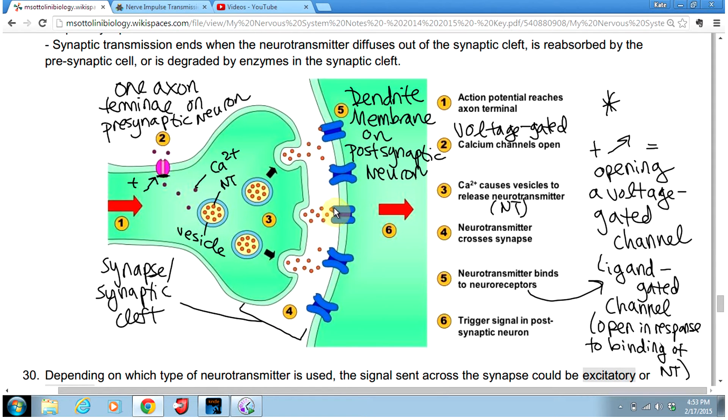Once the neurotransmitter has bound to the channel, the channel is going to open. Usually these are ligand-gated sodium channels. Once it's open, it allows sodium to rush into the postsynaptic neuron. If enough sodium rushes in to bring the membrane potential to negative 55 millivolts—the threshold potential—that is going to cause voltage-gated sodium channels to open and begin the depolarization phase of the action potential in the postsynaptic neuron.